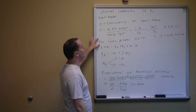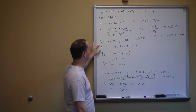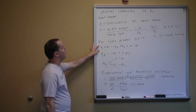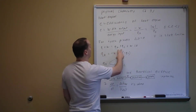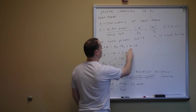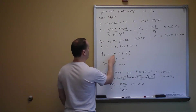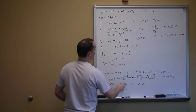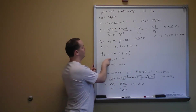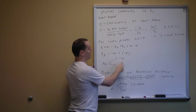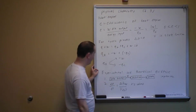For a cyclic process, delta U equals zero because delta U is a state function. The first law then gives Q plus W equals zero. With two heat terms, QH plus QC plus W equals zero. Solving for QH gives QH equal to minus W plus minus QC. This shows the heat coming into the system is effectively split two ways: the useful work being done, and the necessary heat sent to the cold reservoir.